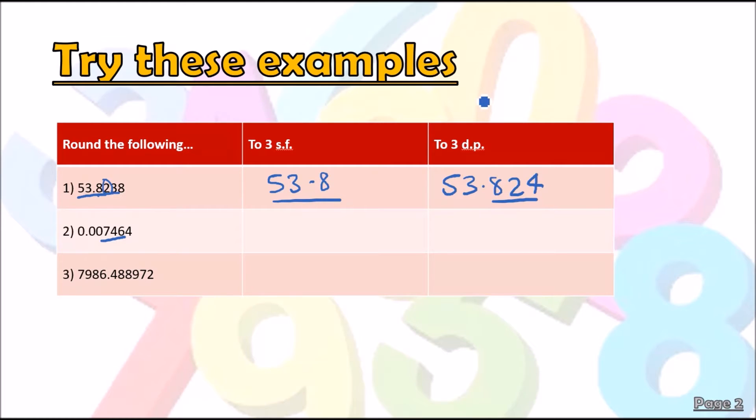Hence the same thing for three DP. So we look at the first three decimal places, and the decider is the four. As it's less than five, it's just going to be 0.007 to three DP. And lastly, our final example, number three. This one is not so tricky, but we just have to pay attention.